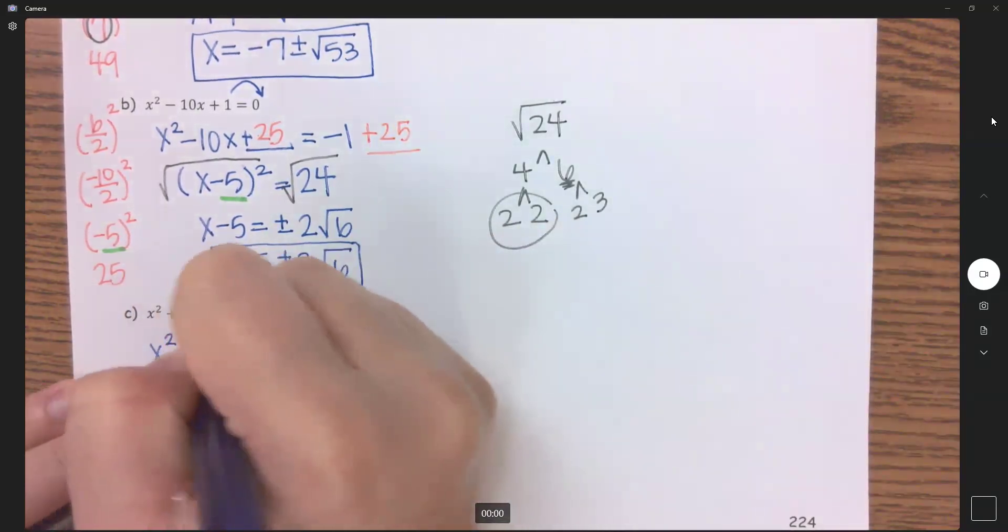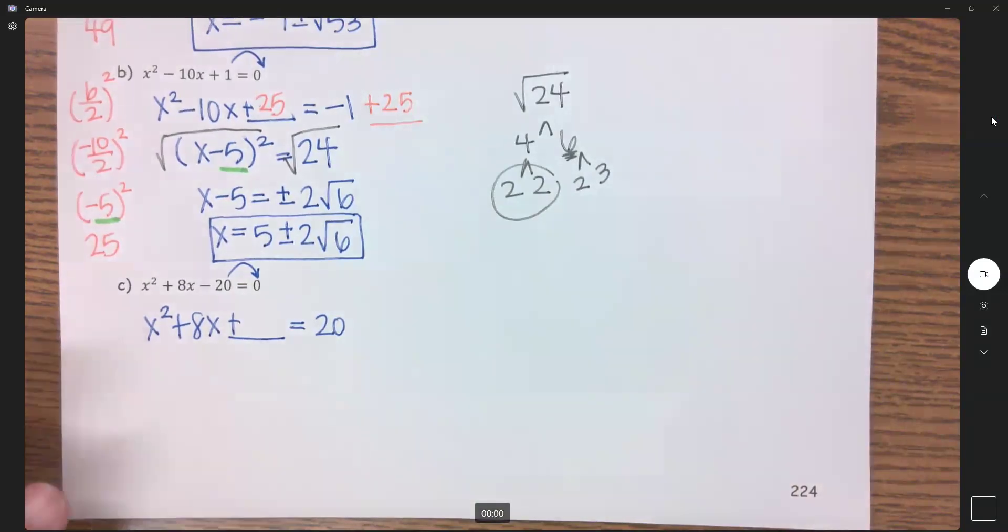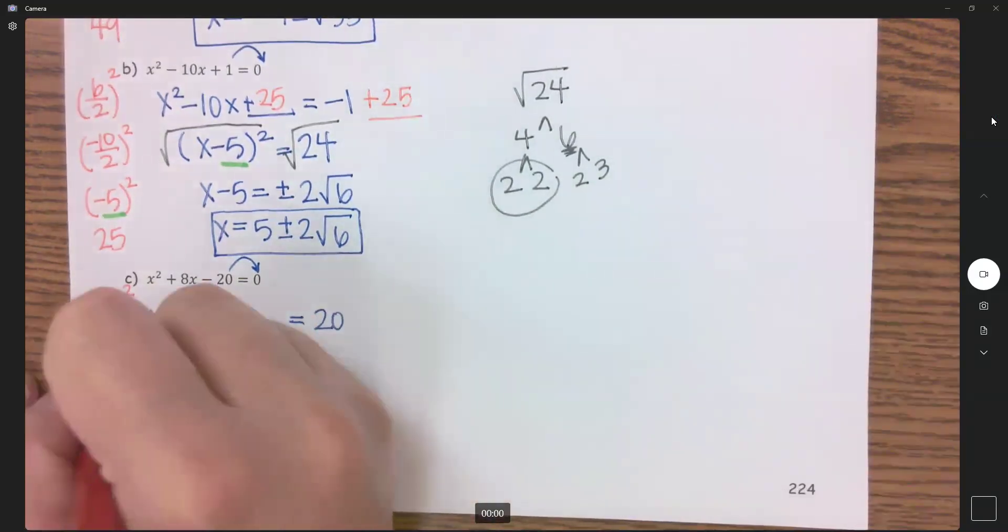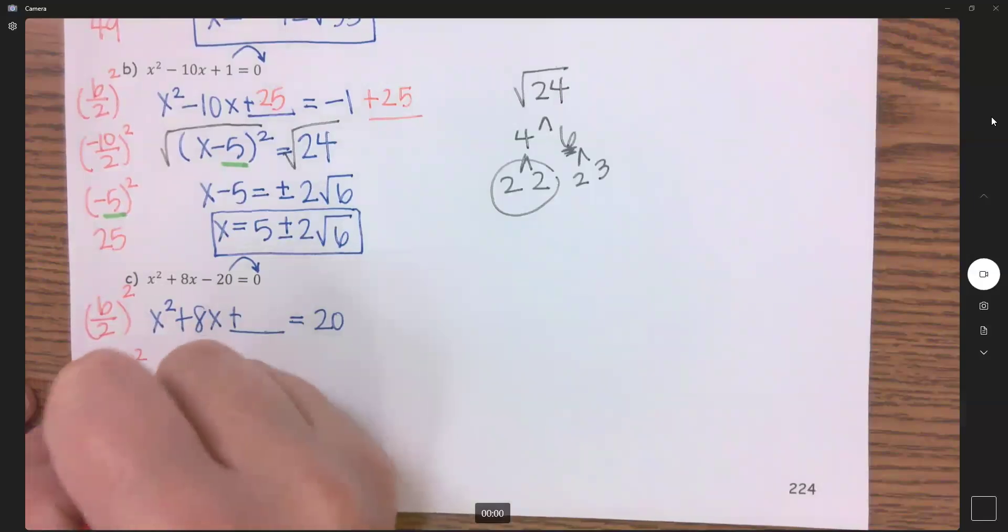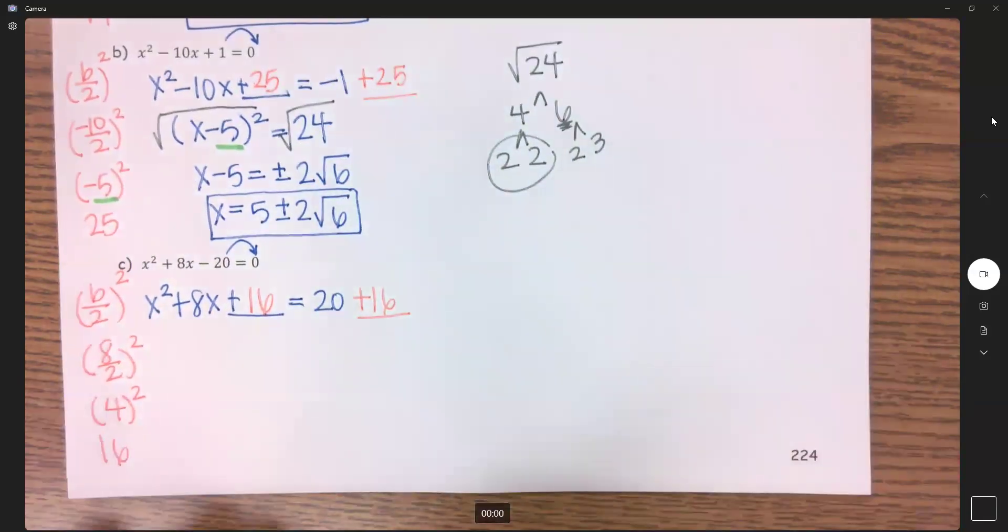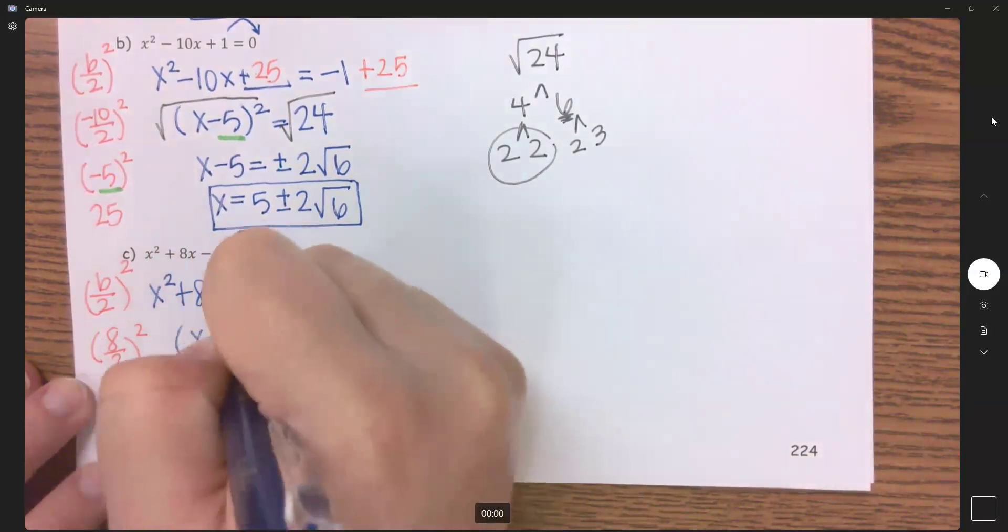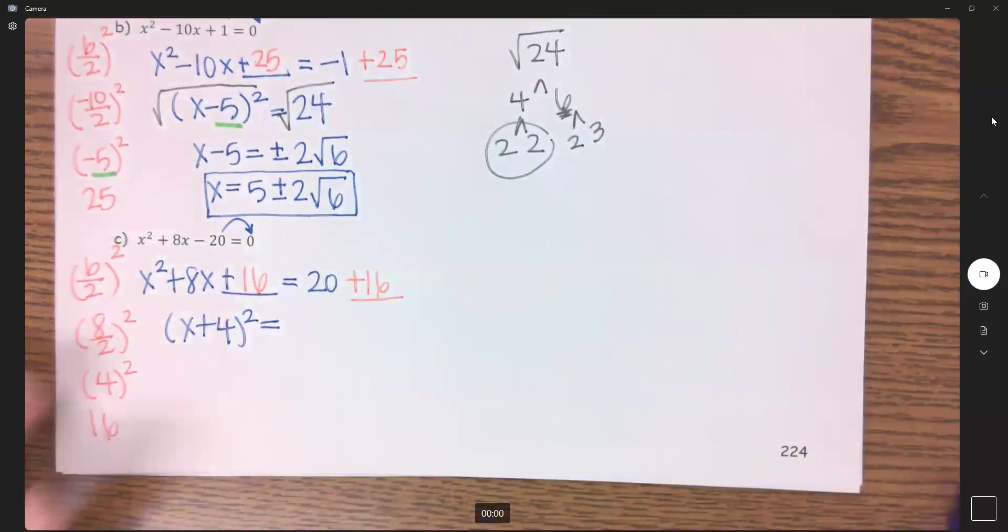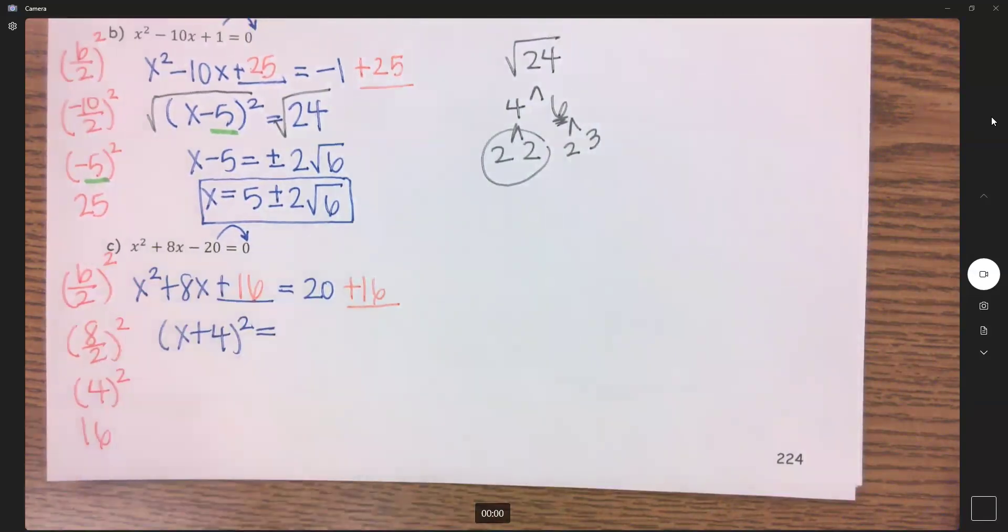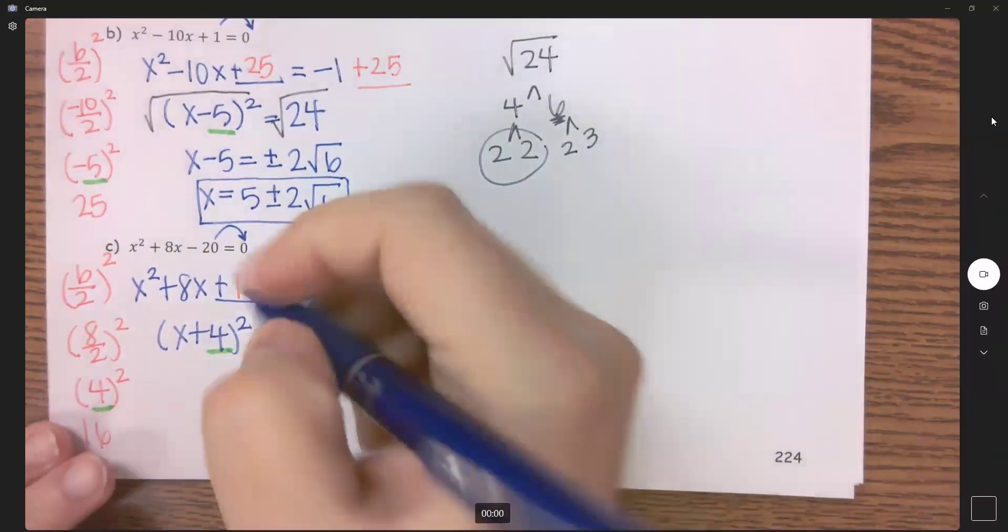First thing I need to do is move that 20 to the other side. So we have x² + 8x + something = 20. Let's figure out what goes in this blank. And that is my (b/2)². So b is 8, 8 ÷ 2 is 4, and 4² is 16. So I'm going to add that to not just one side, but both sides. This here factors to (x + 4)². You can go about it two different ways: ask yourself what multiplies to 16 and adds up to 8, and that's 4 and 4. Or this number here is always the number before you square it. When we add over here, we get 36.